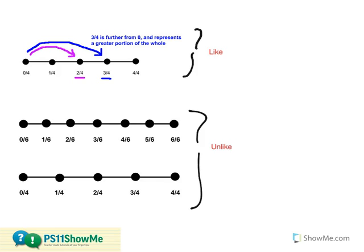Another strategy I can use to compare two unlike fractions is creating two parallel number lines split into unit fractions, and then I can reason their distance from the starting point.